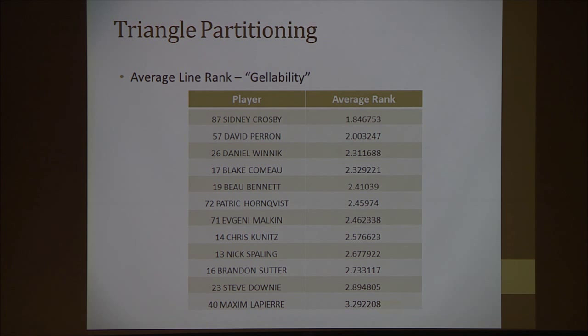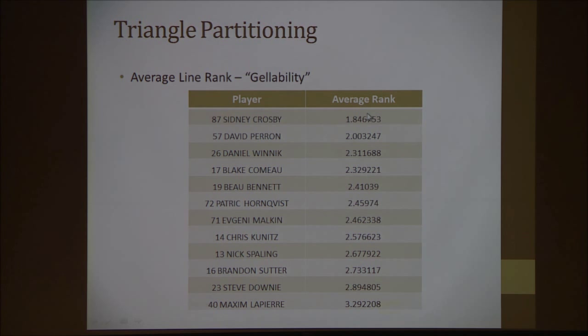We can also count how many times a particular player appears on particular lines. If we assign a numeric value for the first line, second line, third line — first line has a value of one, second line has a value of two, and so on — we can average out how many times a player appears on those ranked lines. This is the outcome for the Pittsburgh Penguins. Sidney Crosby is obviously one of the best players in the world, and his average rank is very high at 1.8. The absolute maximum you can get is one and the absolute minimum is four. The bottom three players — Maxim Lapierre, Steve Downie — they're not good players, so they're obviously down there.